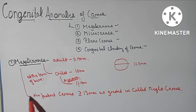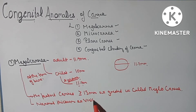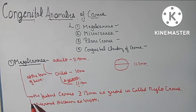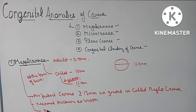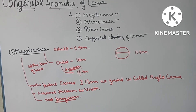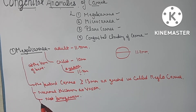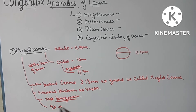In this condition, the cornea is large but normal — with normal thickness. This type of condition is also not progressive, meaning this condition does not increase with age.